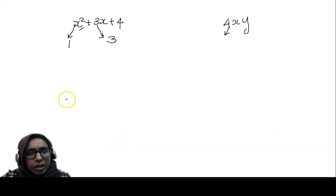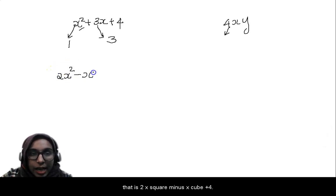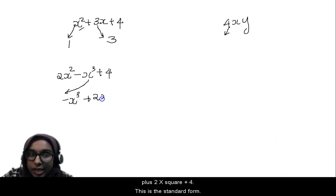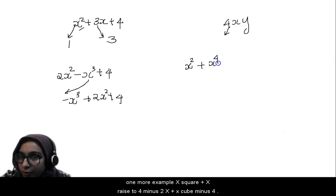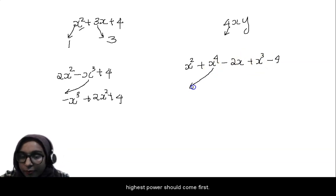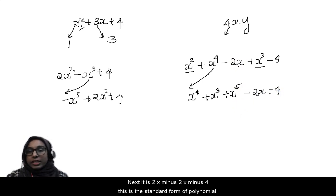Next is standard form. To explain, consider 2x squared minus x cubed plus 4. To represent a polynomial in standard form, the highest power should come first: minus x cubed plus 2x squared plus 4. This is the standard form. One more example: x squared plus x raised to 4 minus 2x plus x cubed minus 4. The standard form is x raised to 4 plus x cubed plus x squared minus 2x minus 4, with the highest power coming first.